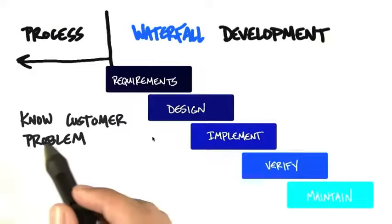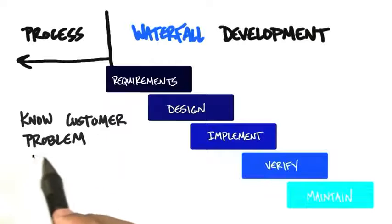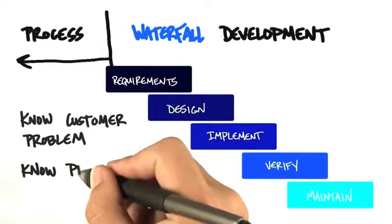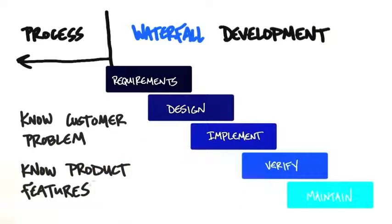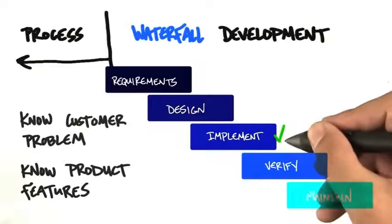And what happens? The consequence of assuming you know the customer problem means you assume you know every possible feature to ship on day one. So therefore, you shut the door and you start implementing.